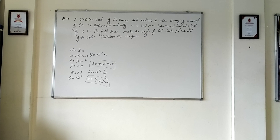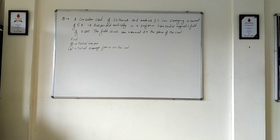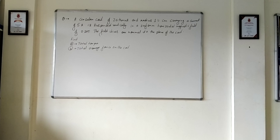One more question as homework: a circular coil of 20 turns, radius 10 cm, carrying a current of 5 ampere is suspended vertically in a uniform magnetic field of 0.10 tesla, and the field lines are normal to the plane of the coil. Find the total torque and total force on the coil. The answer to both parts is zero — figure out why and discuss it in class. Thank you.